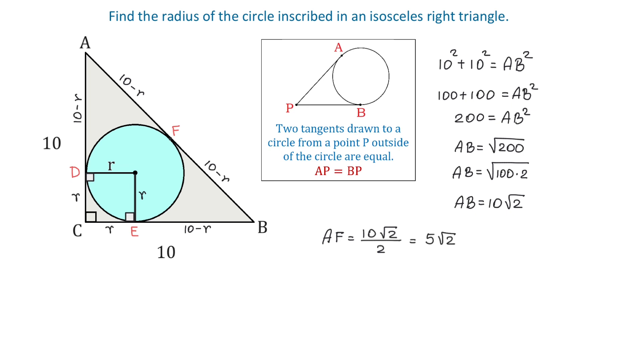Now, in the figure, we have that AF is 10 minus R. Then, to find the radius, we can write that 5 square root of 2 equals 10 minus R. Both these quantities represent AF. If we add R to both sides and subtract 5 square root of 2 from both sides, then we will have the following. R equals 10 minus 5 square root of 2. And this is the radius of the inscribed circle.